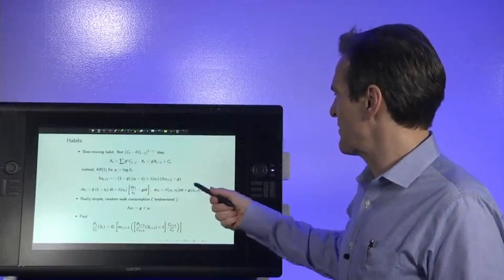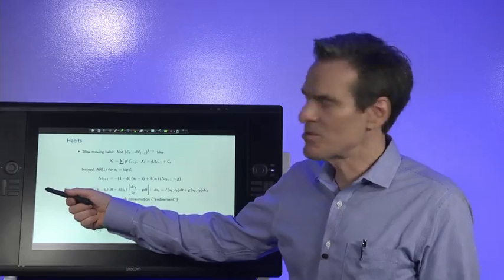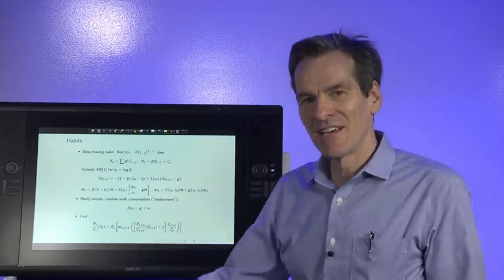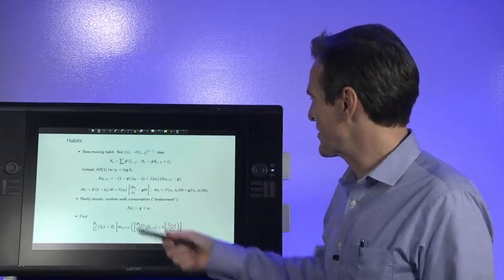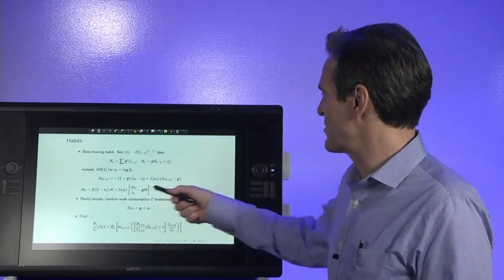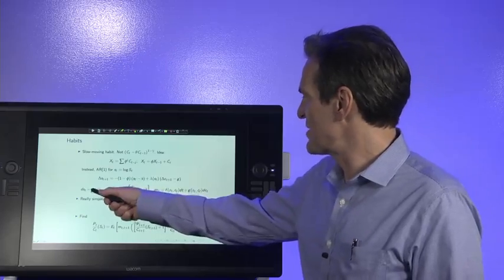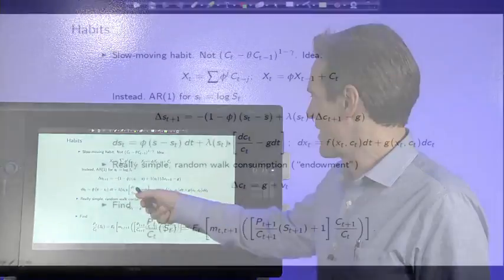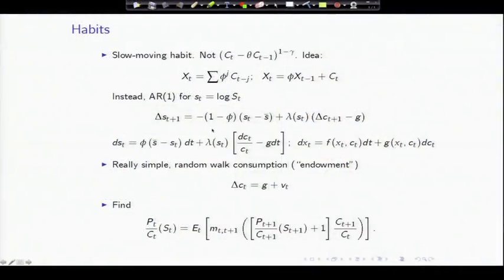The continuous time version of the model, which I would encourage you to use and I think we should have used. We didn't do it for expositional reasons, but it's clearer actually once you learn continuous time to do it in continuous time. It's just an AR1 process with a shock that multiplies lambda of st. So sometimes it's larger and sometimes it's smaller. So we've described the utility function.